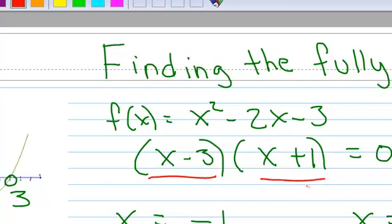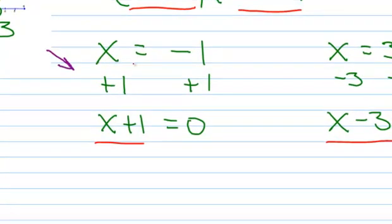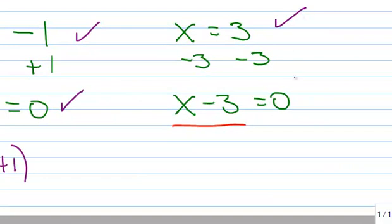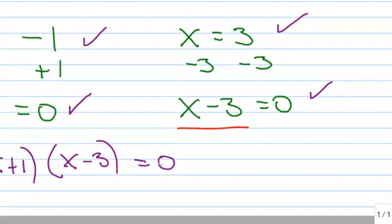Now I can make the fully factored form using this method. I took one of the zeros, which is at negative 1, and made it into its factor, x plus 1. Then I took the other x-intercept, which is 3, and made it into a factor, x minus 3. And there's a new way to factor this polynomial.